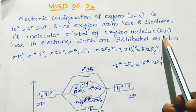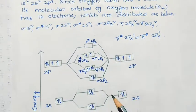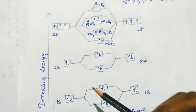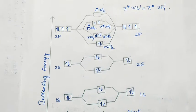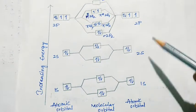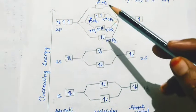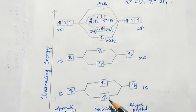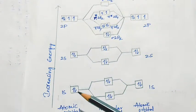There are 16 electrons in the molecular orbital of oxygen molecule which we will distribute. Here is the energy diagram. As with nitrogen, these are the atomic orbitals of one oxygen atom and these are the atomic orbitals of the other oxygen atom. The two atomic orbitals combine to form the molecular orbital of the O2 molecule.